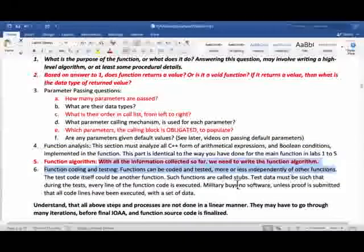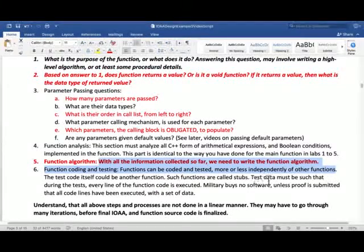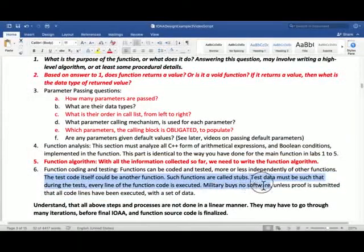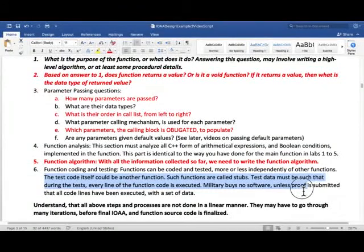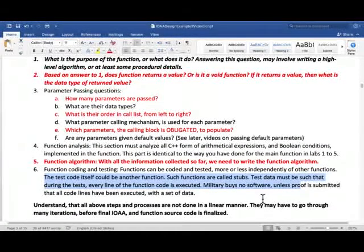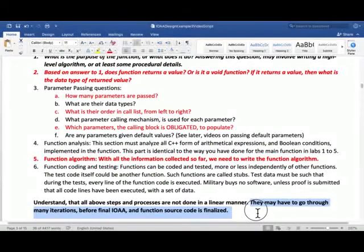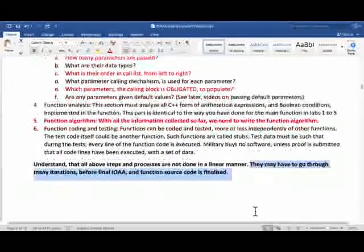Number five, function algorithm: with all information collected so far, we need to write the function algorithm. And last one, function coding and testing: function can be coded and tested more or less independently of other functions. Test code itself could be another function - such functions are called stubs. Test data must be such that during tests every line of the function code is executed. In fact, military buys no software unless proof is submitted that all code lines have been executed in a function with a set of data enough to do that. Understand that all above steps and processes are not done in a linear manner. You may have to go through many iterations before final IOA, input output analysis, algorithm, and the function source code is finalized.